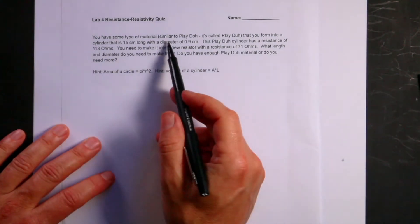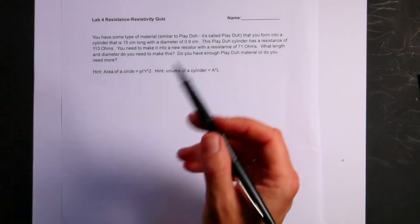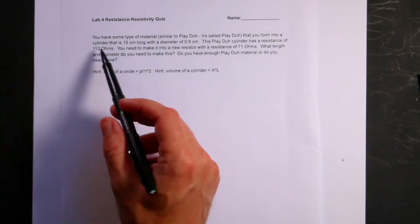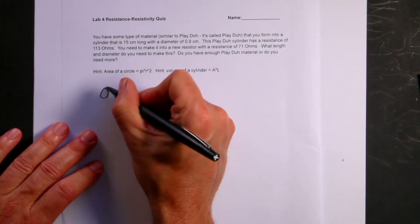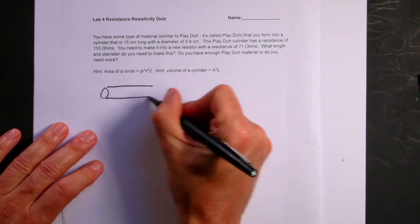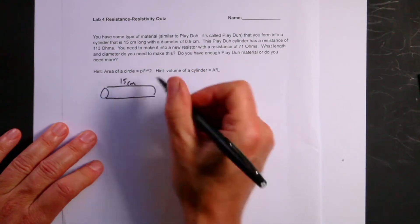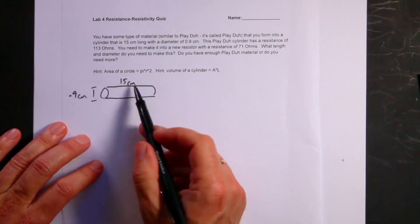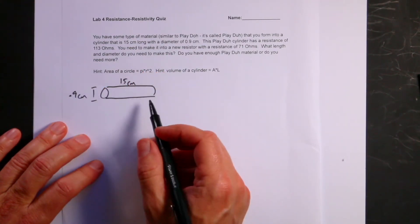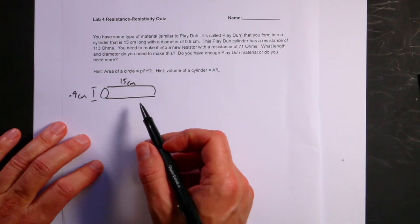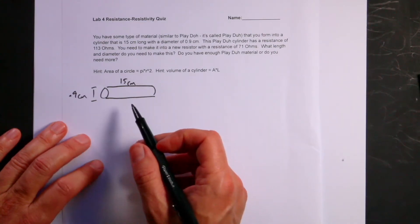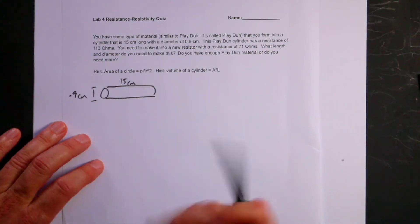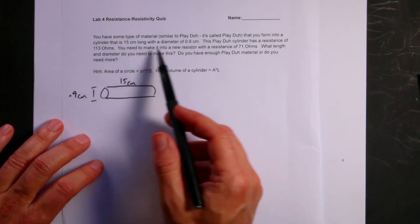You have some type of Play-Doh, and it's not Play-Doh because it's my quiz. So I made this Play-Doh. I made that up. It's formed into a cylinder that's 15 centimeters long, and it has a diameter of 0.9 centimeters. In this case, it's probably a good idea to write down the units because you could do the problem without writing down the units, but you want to be careful because it depends on what I ask for.